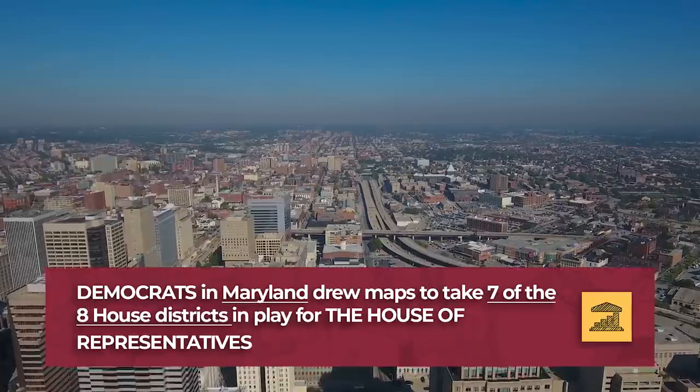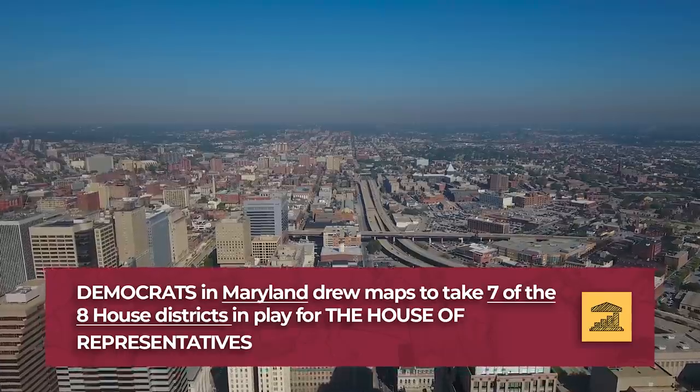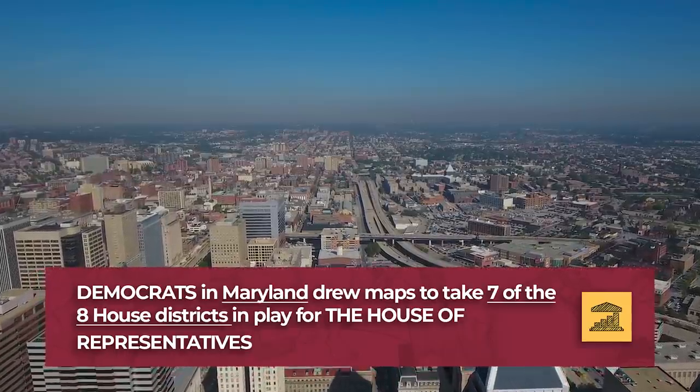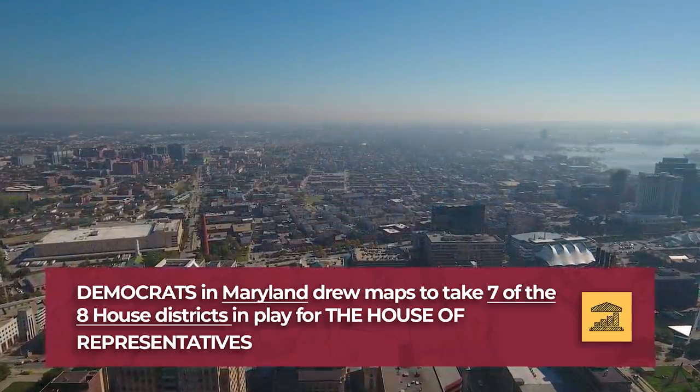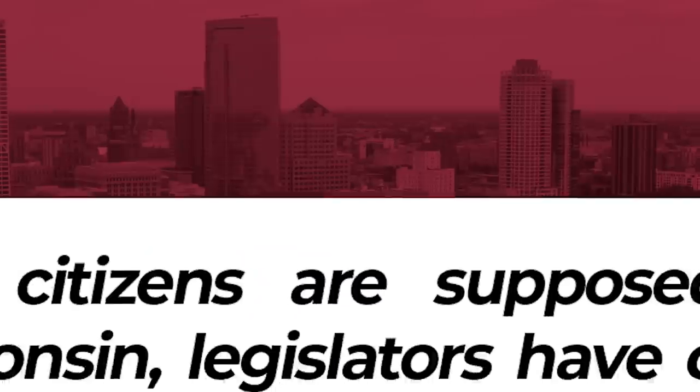But the Democrats also use gerrymandering when they can. In Maryland, for example, they designed the map to take seven of the eight districts in play for the House of Representatives. The fact is that Whitford is very clear about what exactly gerrymandering is.